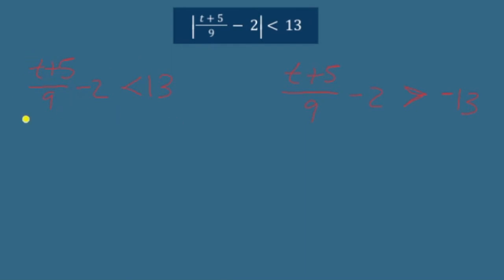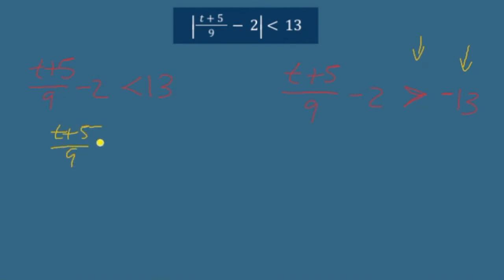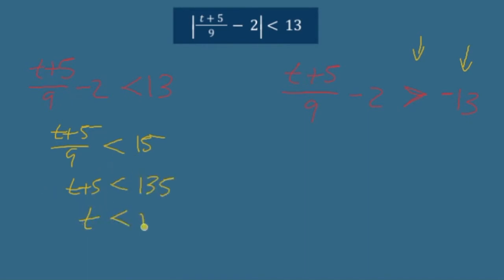Same as the last type: we're writing the inequality exactly as it appears, just drop the absolute values. Then we also rewrite it — reverse the symbol and take the opposite of the value. Solving then goes on as before. Add 2 to both sides: (T + 5)/9 is less than 15. Multiply by 9 on both sides: T + 5 is less than 135. Subtract 5 from both sides: T is less than 130.